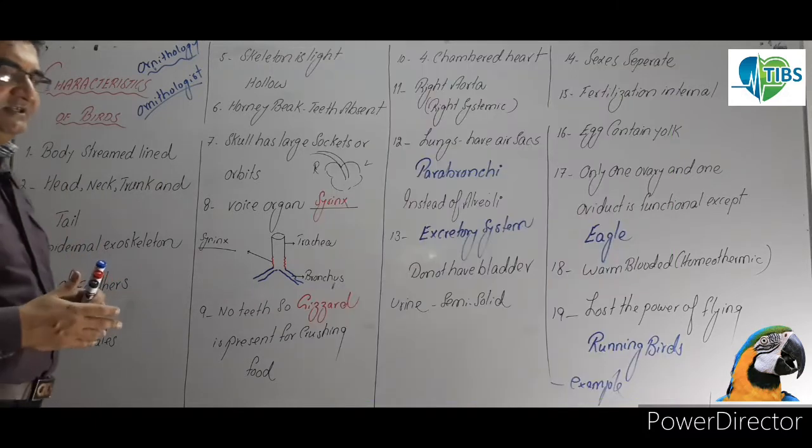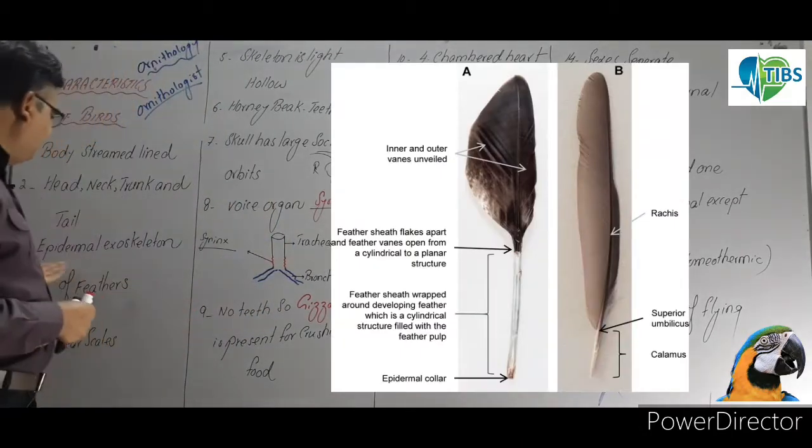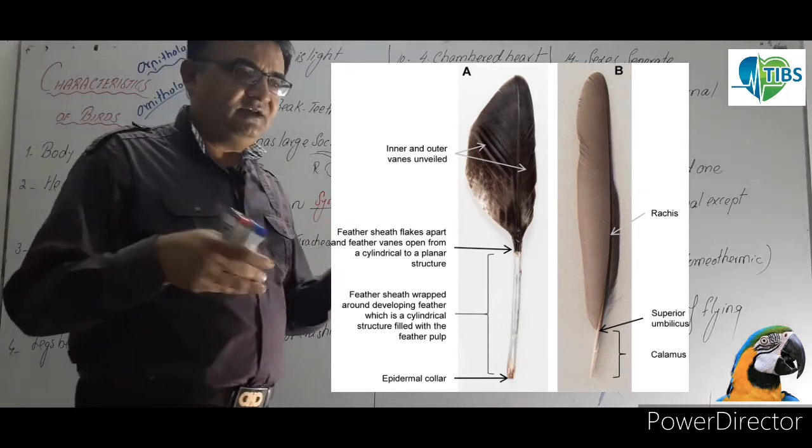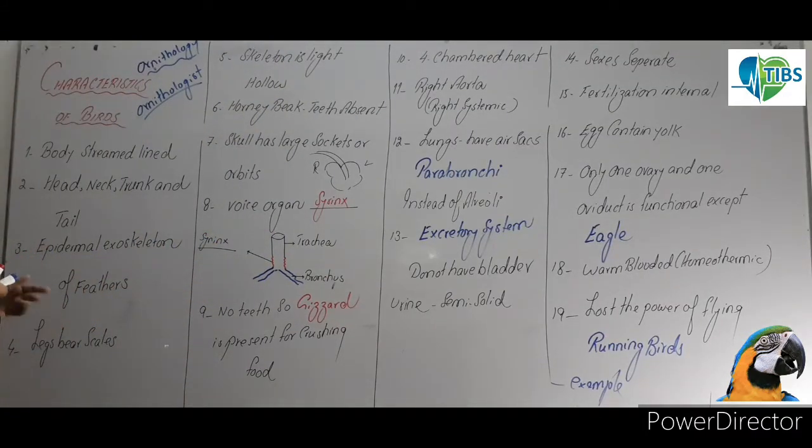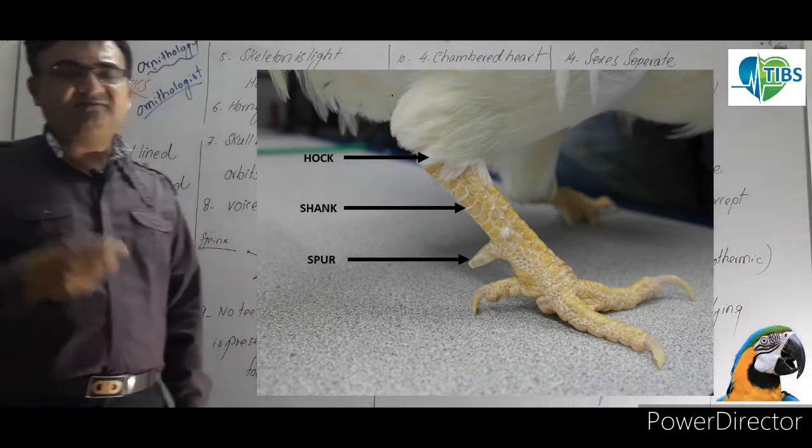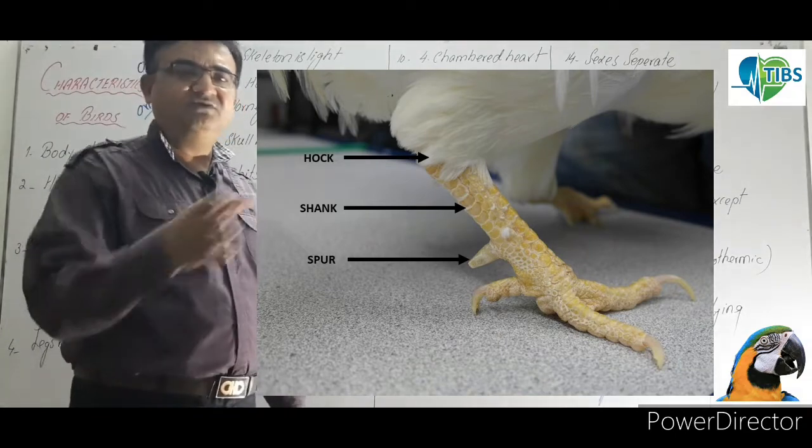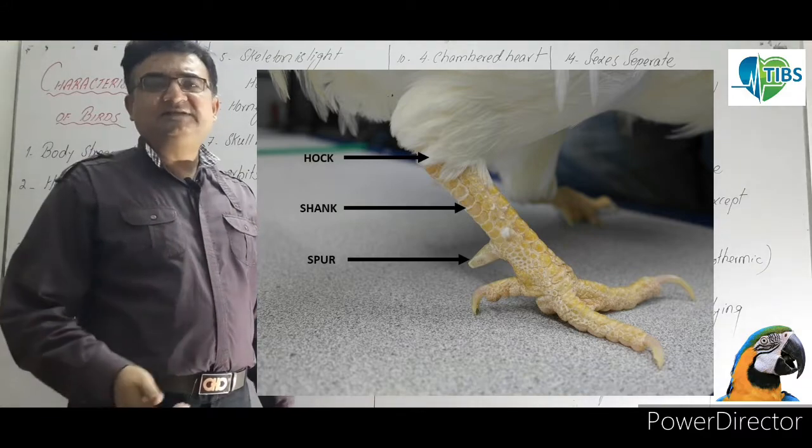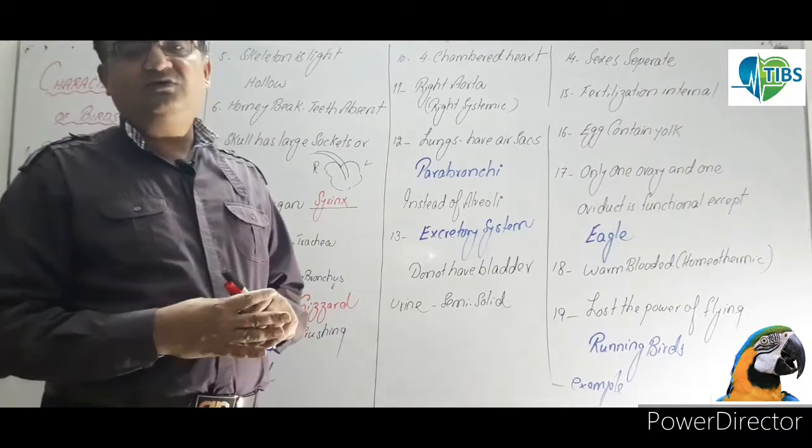The exoskeleton is made by the epidermis. The feathers are not only for body warmth. In their legs, you can see the scales. And the scales show that birds come from reptiles. The reptiles have body scales. But in evolution, on their legs, the scales remain. This also confirms that birds originate from reptiles.